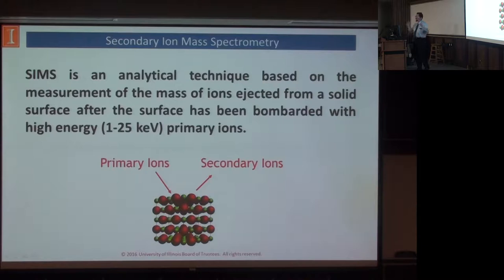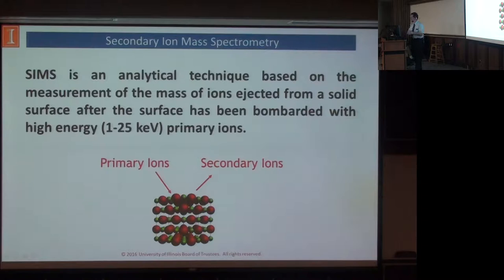We talk about high-energy ions in this case, which is very different than the high-energy ions in RBS, where those were in the MeV region. These are only in the 1 to about 25 kilovolts range. Key advantages of SIMS is that we are measuring ions coming out and the mass of them. Therefore, we can actually look at things like isotope differences, which you can't do with other techniques. We're also sensitive all the way down to hydrogen, which is not possible with many other techniques, and we have a huge dynamic range that allows us to look at things with very low concentrations, well below 1%.